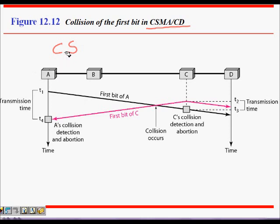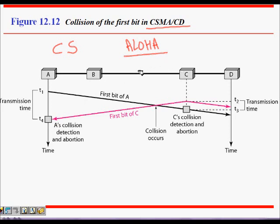The simplest multiple access protocol is ALOHA. If A, B, C, and D are all connected through an Ethernet wire, in pure ALOHA anyone with data to send will transmit without sensing whether the channel is idle or busy. If A starts transmitting and C was already transmitting, there will be a collision and both frames will be destroyed.